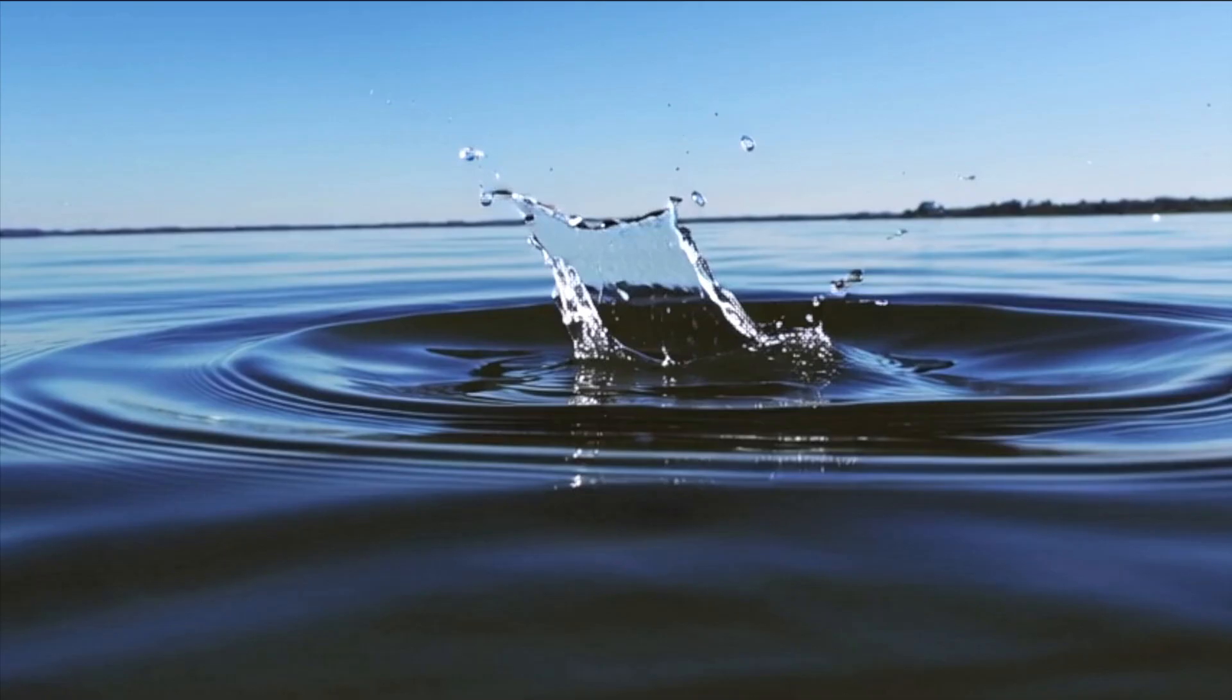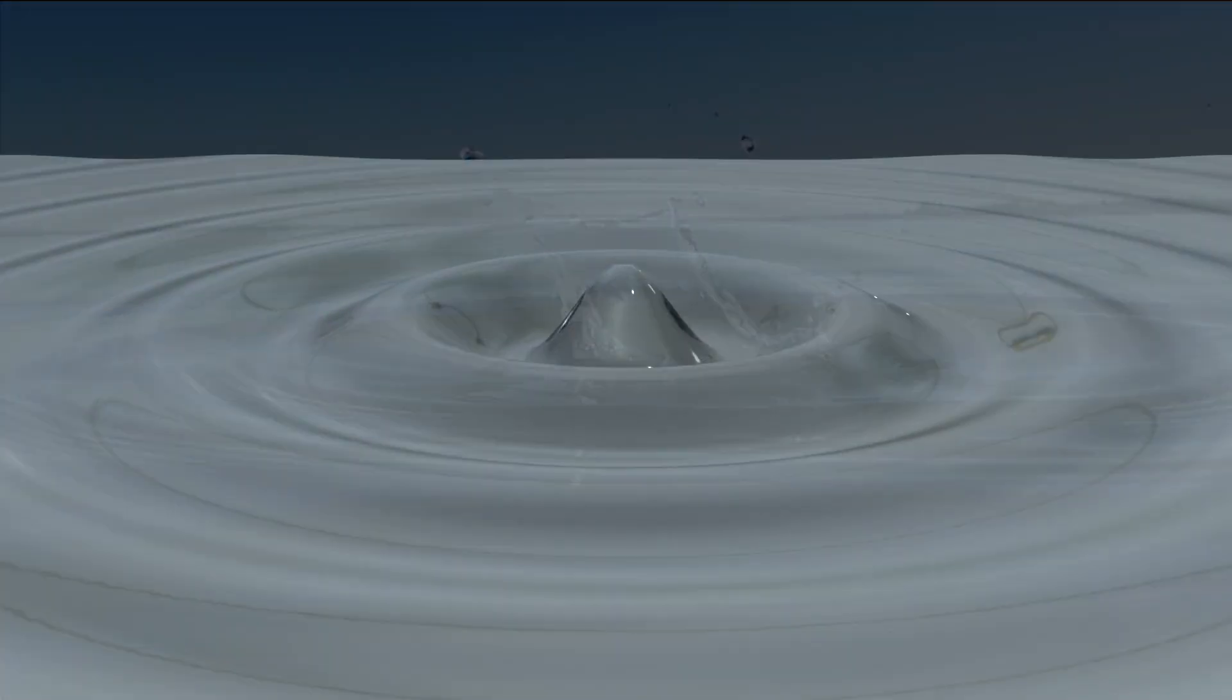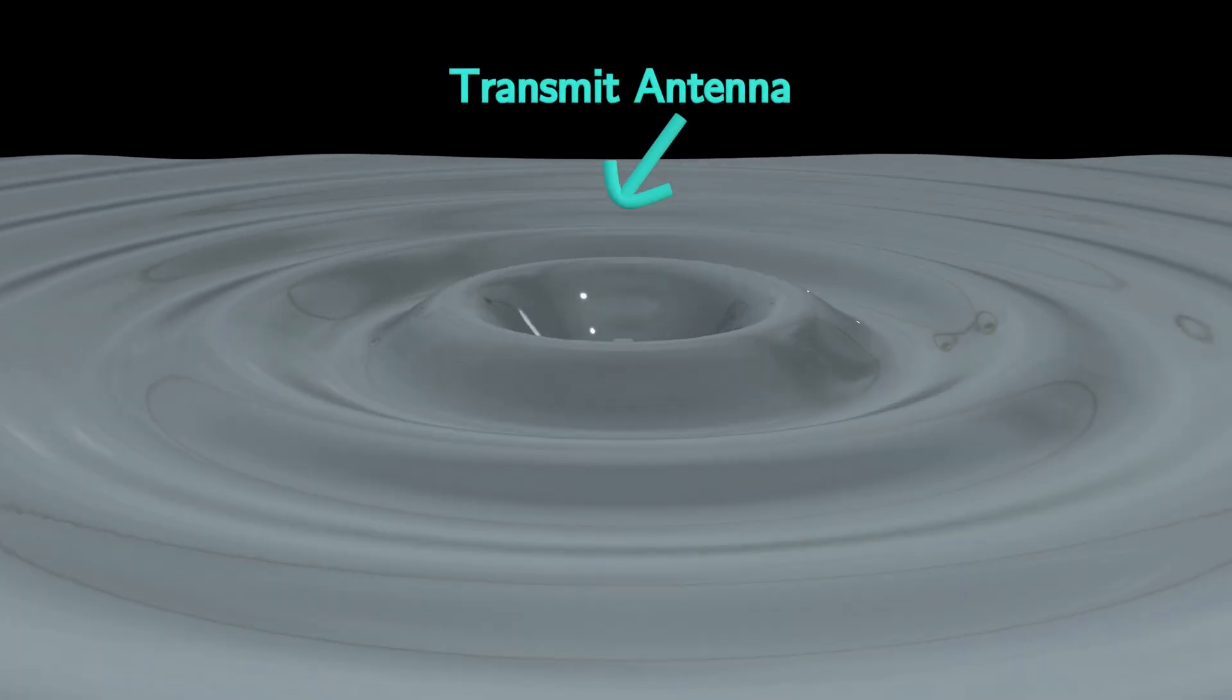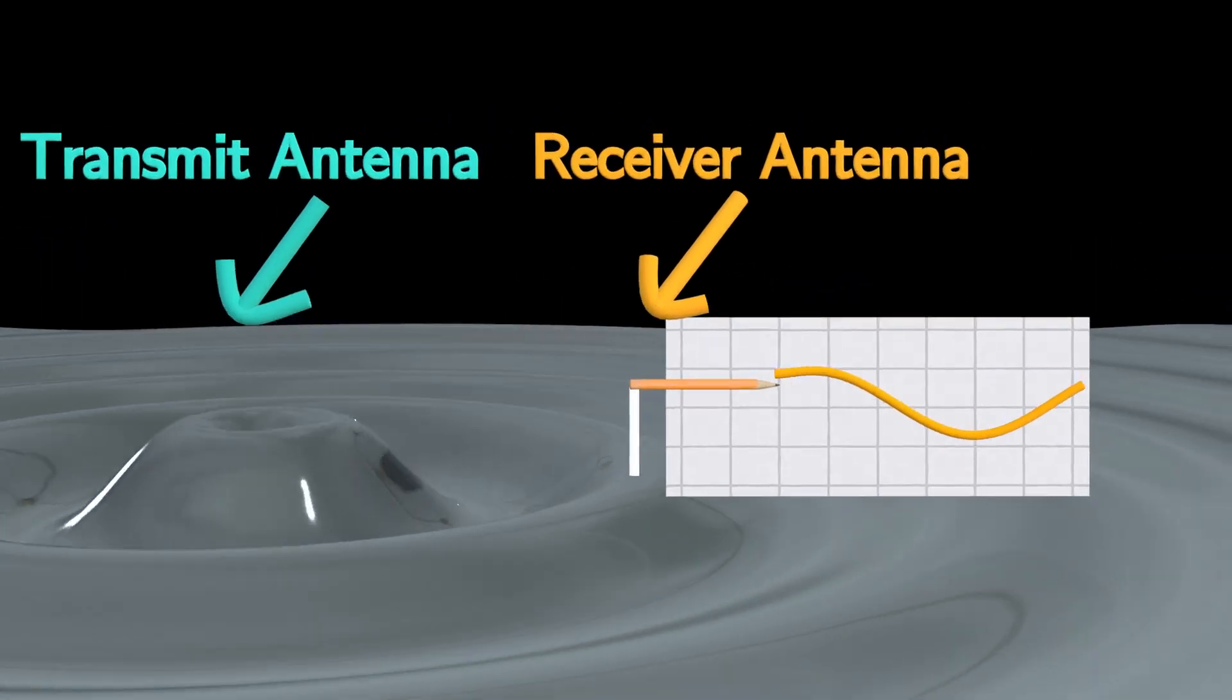Think of wireless communication signals as waves rippling across water. A transmitter antenna generates these waves, and the receiver antenna measures their intensity.